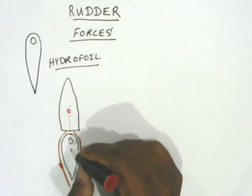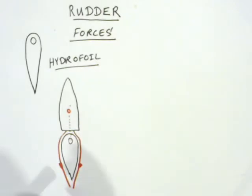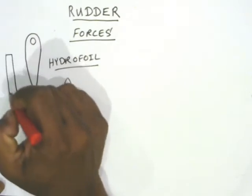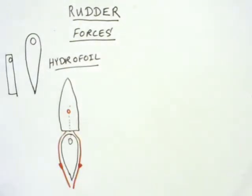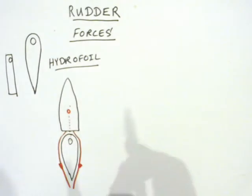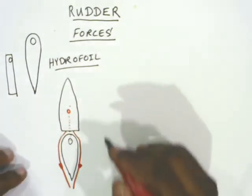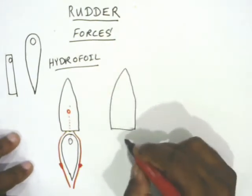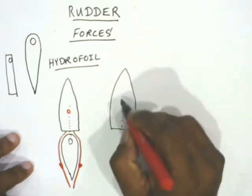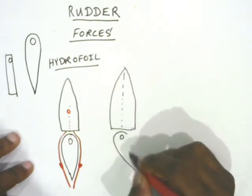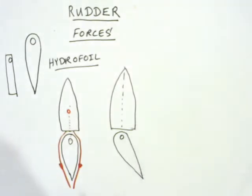Why this hydrofoil shape? Why not just a flat piece in modern days? You will see why when an angle is applied to the rudder. For example, let's say this is the ship's head and a certain rudder angle is applied — a starboard rudder. You will understand the significance of this shape when angle is applied.